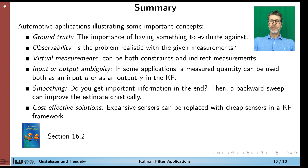Well, in that case, you might get much better estimates if you apply this backward sweep of the RTS smoother. And there's one particular application, driving cost-effective solutions in applications, where you have a selection of different sensors. Some are very expensive, some are cheap. But there might be combinations of cheap sensors that can replace an expensive sensor, so you get the cost-effective solution. The reading advice for this part is section 16.2.